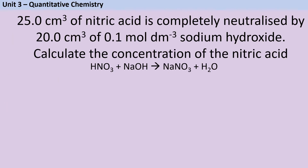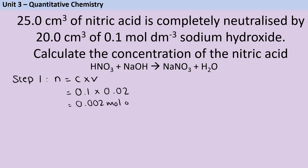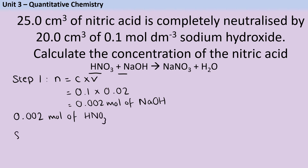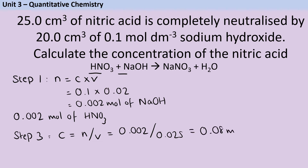Here's one more extended question. We identify sodium hydroxide as the reactant with two pieces of information. Step one: moles = 0.1 × 0.02 = 0.002 mol NaOH. Step two: the equation shows a one-to-one ratio, so we still have 0.002 mol of acid — no maths needed, just write it down. Step three: concentration = 0.002 ÷ 0.025 = 0.08 mol/dm³.